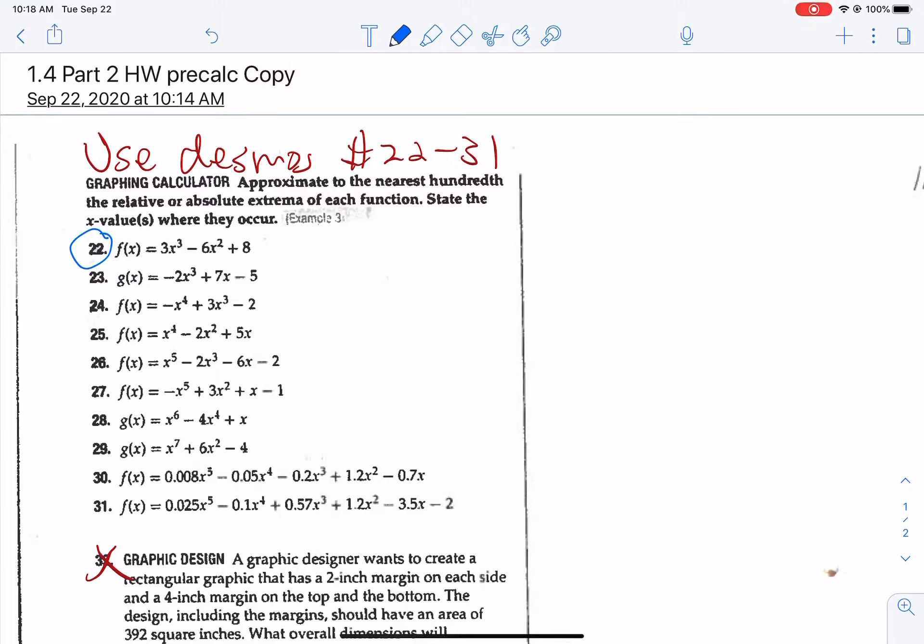So let's read the instructions. It says approximate to the nearest hundredth the relative or absolute extremum of the function and state the x-values where they are occurring. So we're going to take and we're going to put that equation into decimals, highlight your points of extrema, screenshot it. I'm going to kind of take and crop it just so you can see that part of the graph. And then you're going to go over to the little plus button and in the photo library here, you're going to insert that. You can just make it little.